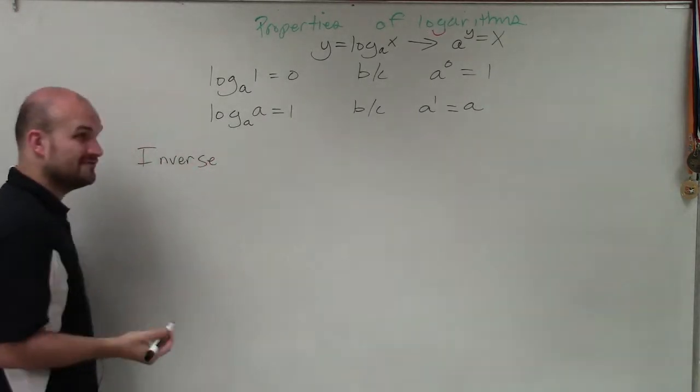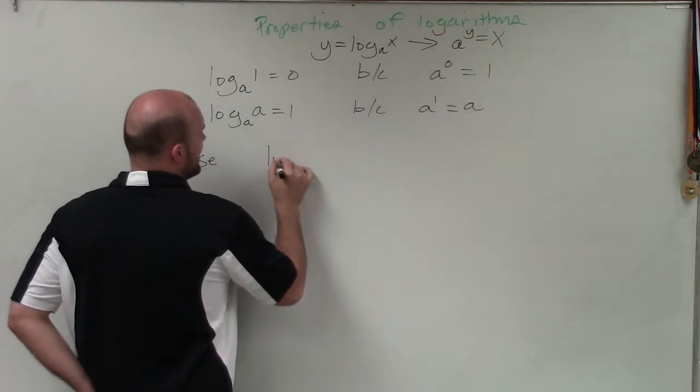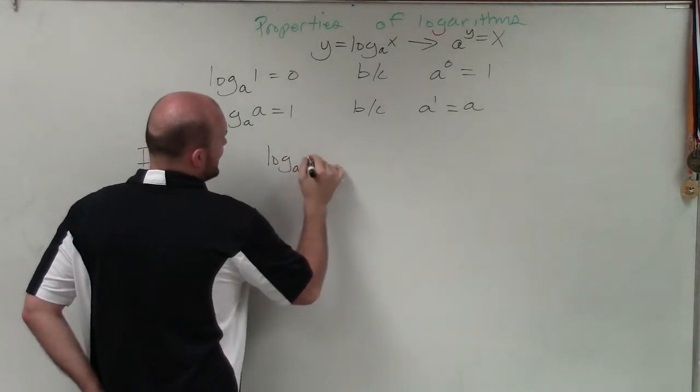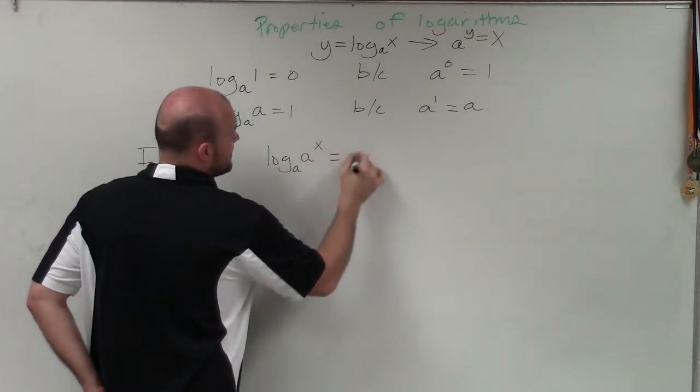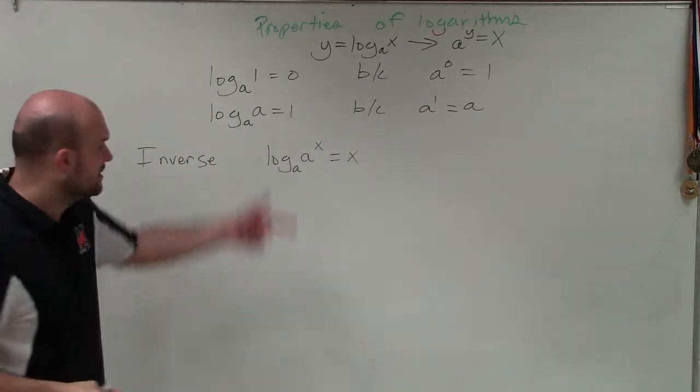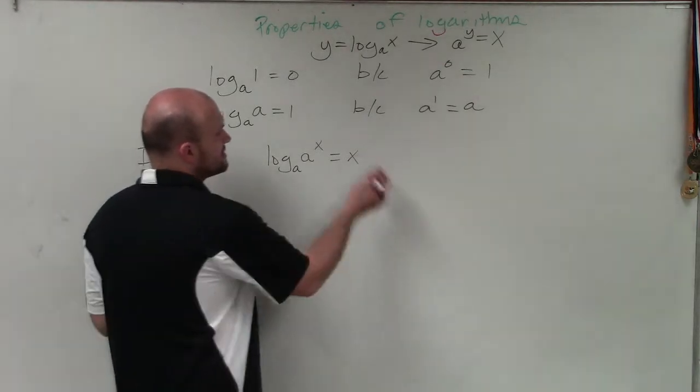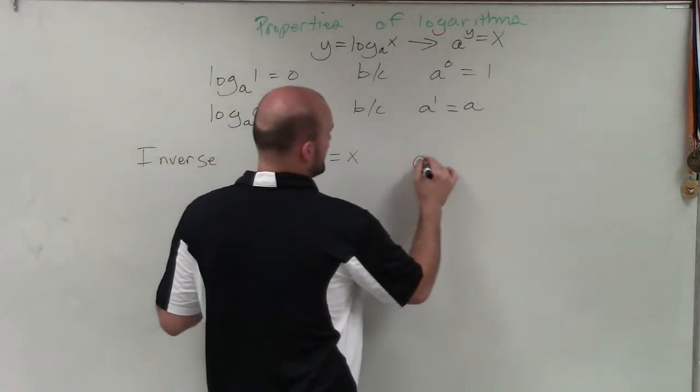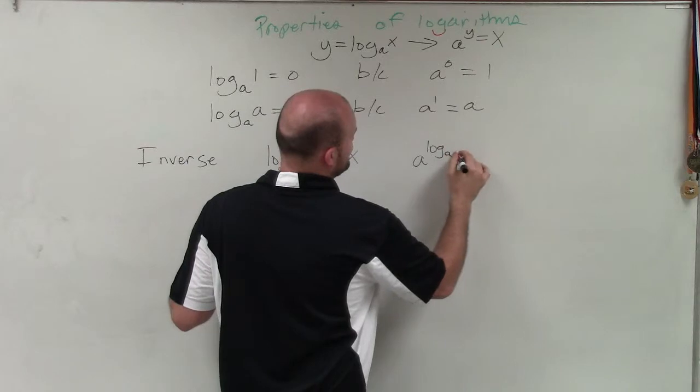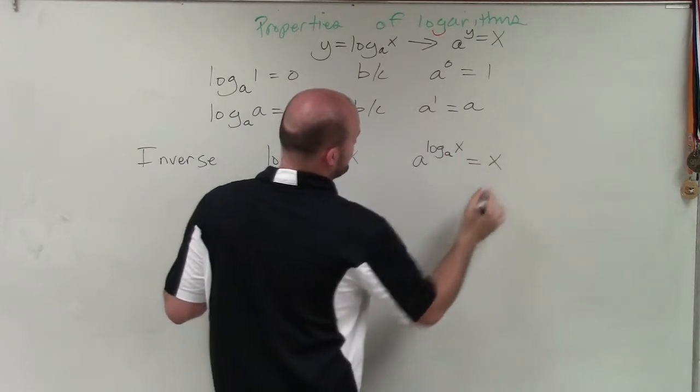The first one is the inverse property. And what the inverse property pretty much states, if I have log base a of a raised to the x, that just equals x. Think about it. Well, we'll go back through. It'll probably be better when I explain afterwards. As well as a raised to the log base a of x just equals x.